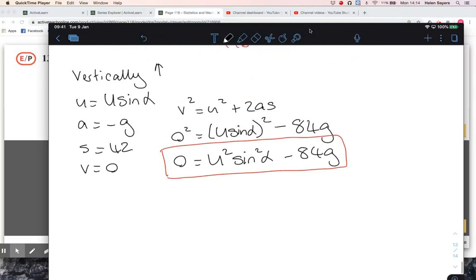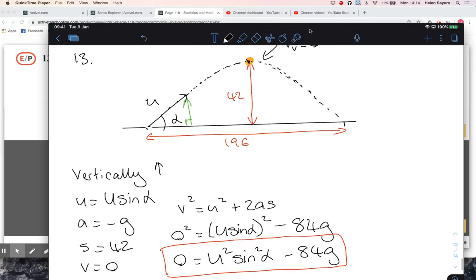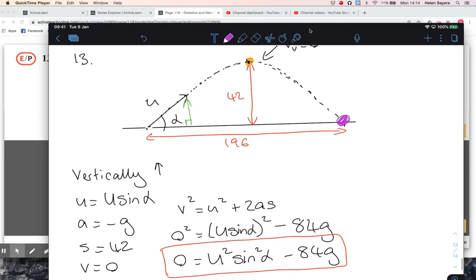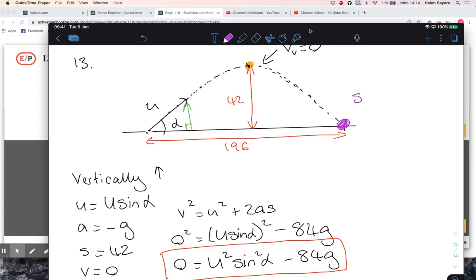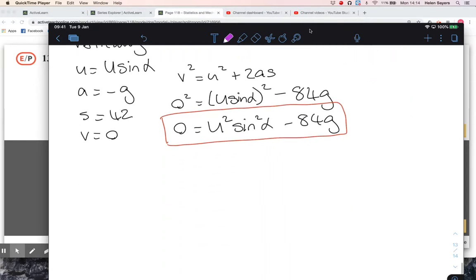Now let's think about this point where it hits the ground. I know that its horizontal displacement is 196, and I know that its vertical displacement is zero, because even though it's moved, in terms of vertical displacement it's ended up back at ground level. Let's use those, going horizontally first because that's usually easier.